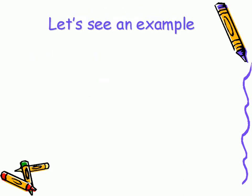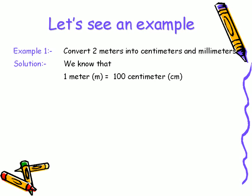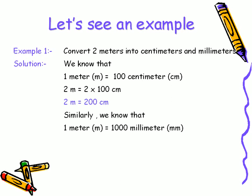For a good hold over the formulae, let's see two examples. In the first example, we need to convert two meters into centimeters and millimeters. As we know that one meter is equal to one hundred centimeters, so two meters would be equal to two times one hundred centimeters, which is equal to two hundred centimeters.